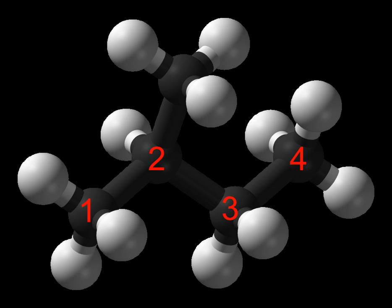Alkanes have the general chemical formula CnH2n+2. The alkanes range in complexity from the simplest case of methane CH4, where n equals 1, sometimes called the parent molecule, to arbitrarily large and complex molecules, like pentacontane C50H102, or 6-ethyl-2-methyl-5-(1-methylethyl)octane, an isomer of tetradecane C14H30.